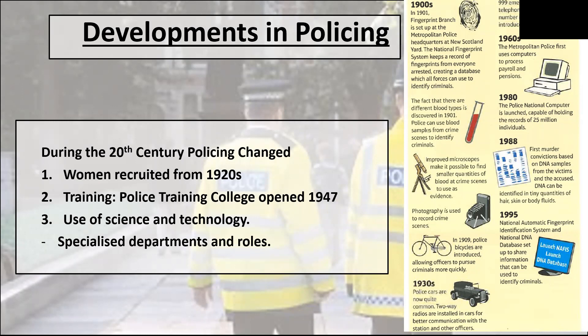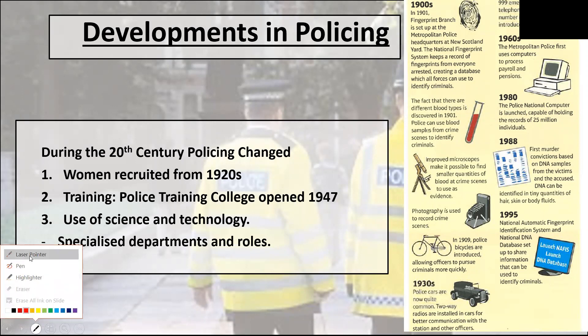From around the 1900s we start to see some developments. From the 1920s, women were allowed in and invited to take part in policing. In 1947, the police training college was set up. Before then there was no proper official police training — you were just expected to learn on the job from day one. From 1947, the police training college actively took involvement in training police officers.